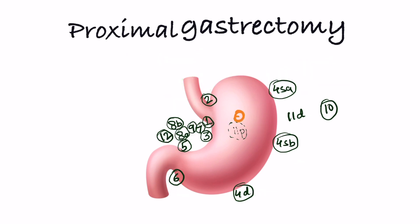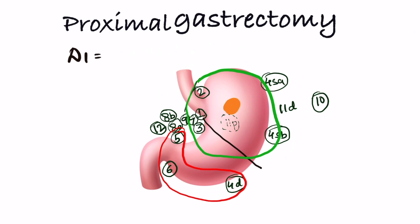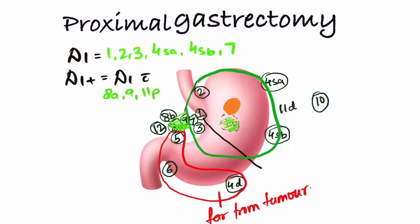For proximal tumor where proximal gastrectomy is done, D1 means stations 1, 2, 3A, 4SA, 4SB, and 7. Stations 5, 6, and 4D are far away and not included. D1 plus adds stations 8A, 9, and 11P. D2 adds 11D to D1 plus.